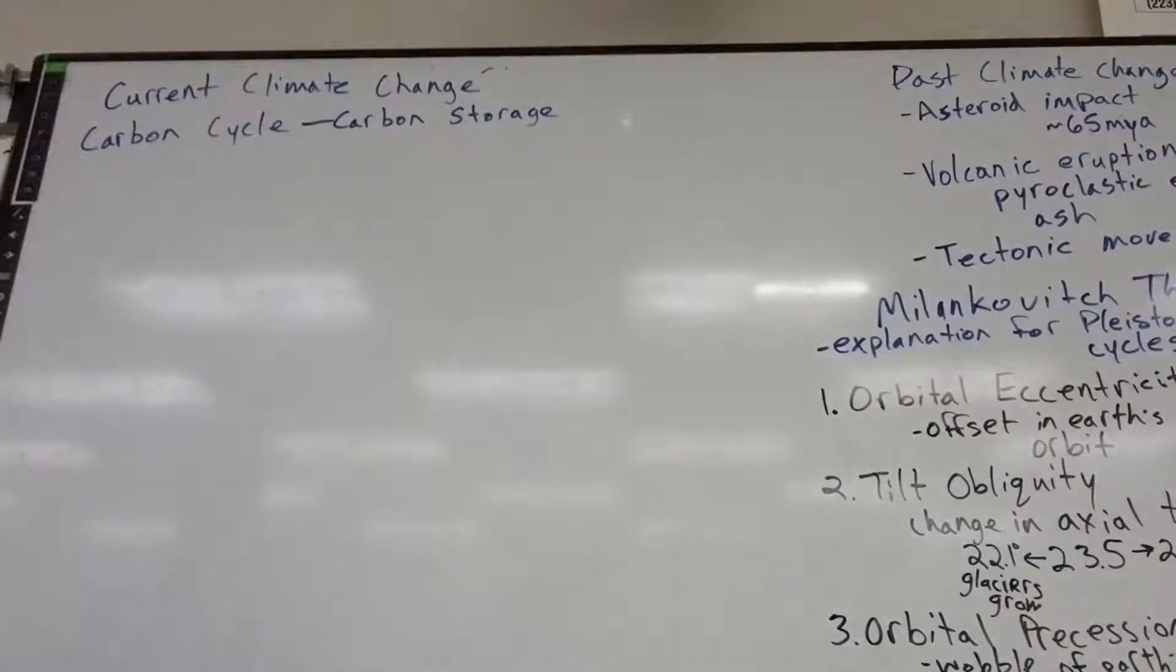If you have lots of plants and animals on Earth, then there's more carbon in those living things. If there's fewer plants on Earth, then there's more carbon other places. And sometimes there's more carbon in the atmosphere. So, the number one biggest carbon reservoir, the thing that holds the most carbon...